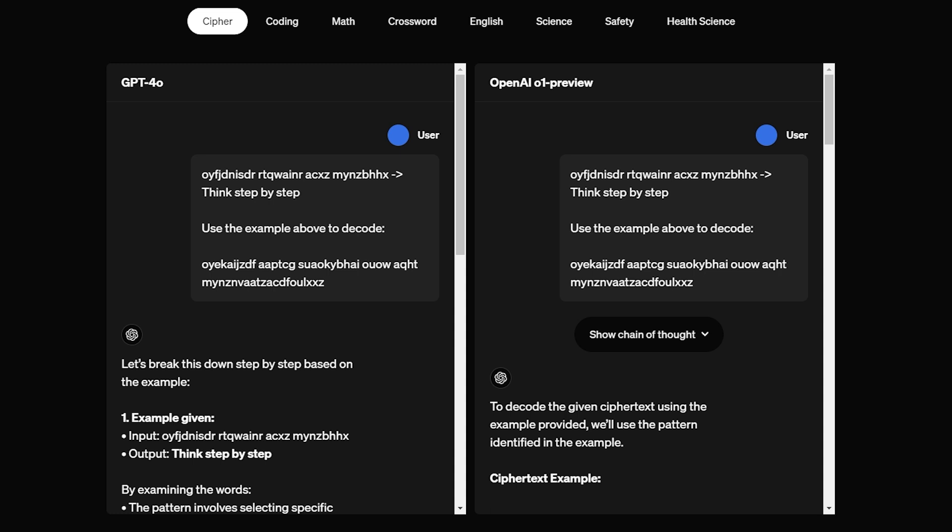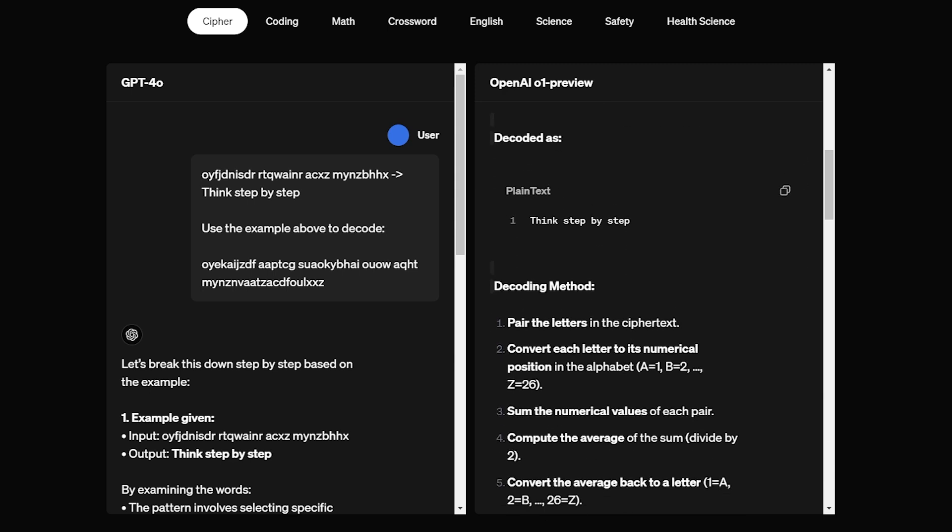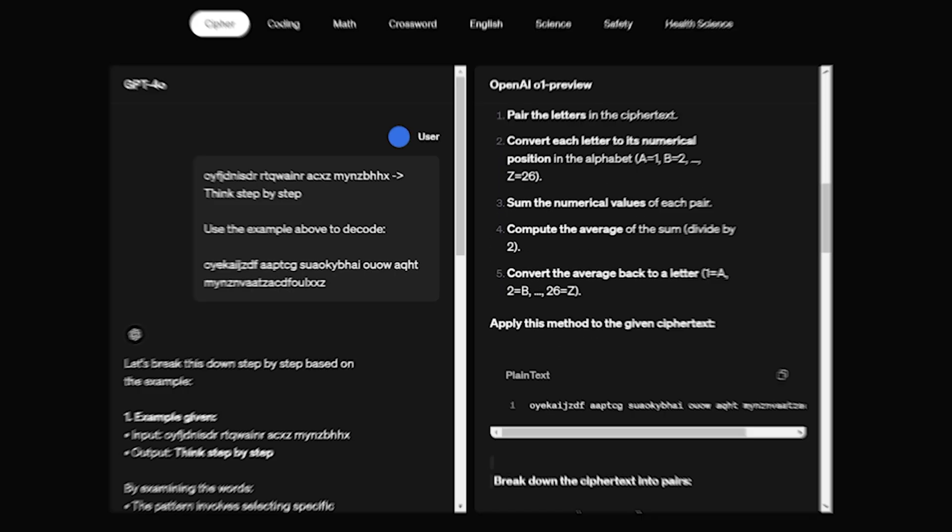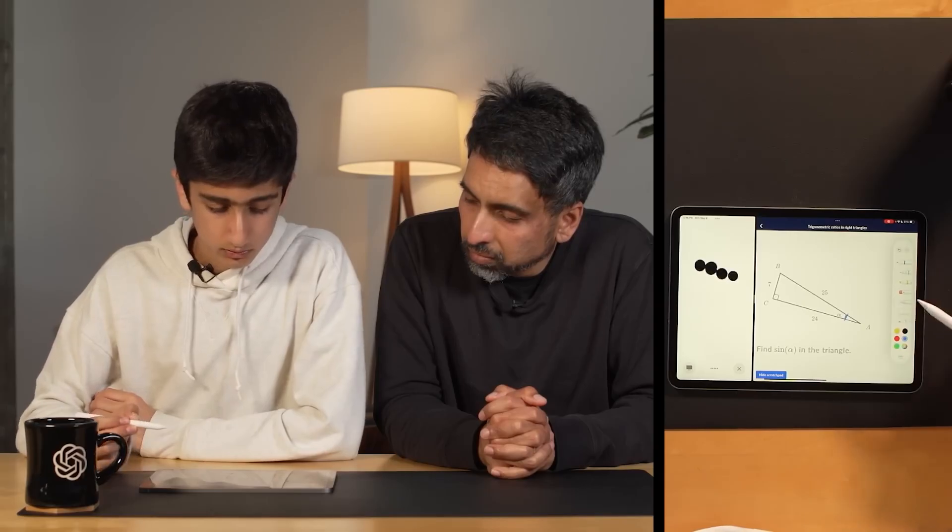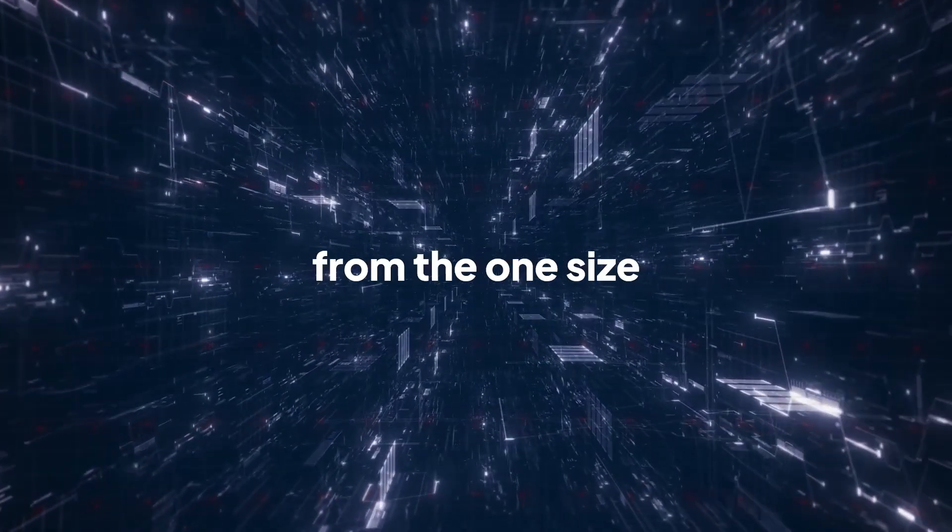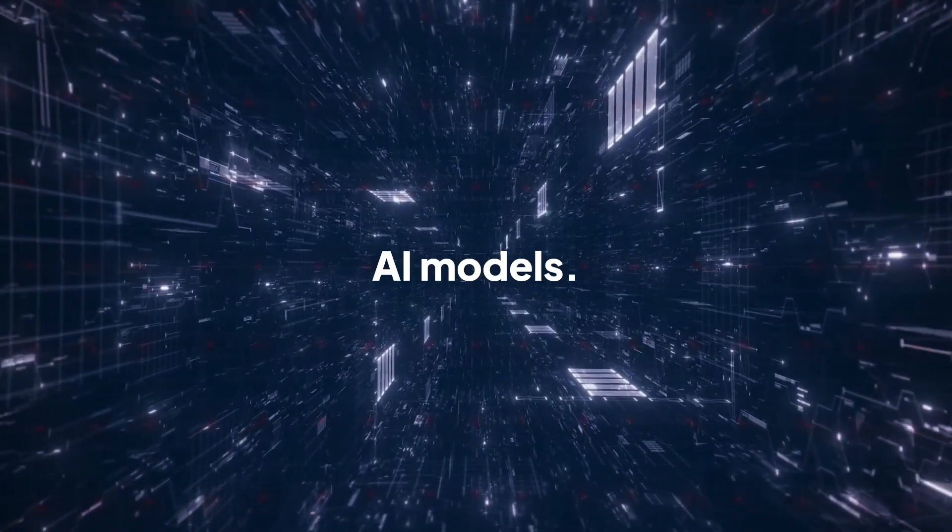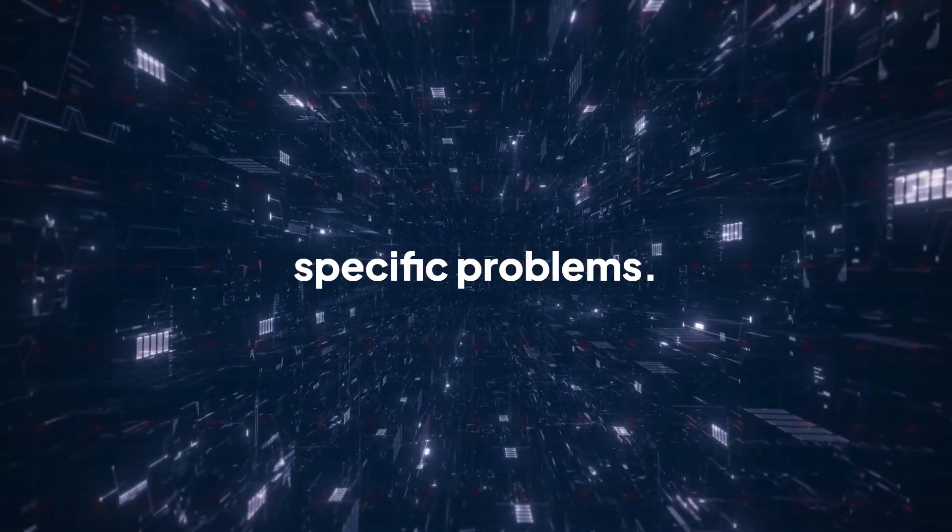Sure, it's slower, but when you're tackling something like complex engineering problems or advanced physics, wouldn't you rather have the AI take its time to get it right? Now let's zoom out a bit and think about the bigger picture here. This isn't just about GPT-01 versus GPT-40. This is about how AI is evolving as a whole. We're moving away from the one-size-fits-all approach of AI models. Now we're seeing specialized tools built to tackle specific problems.